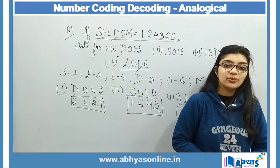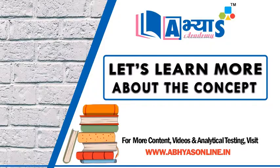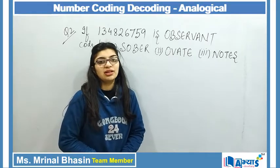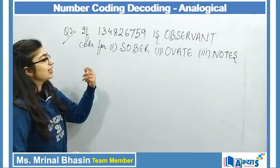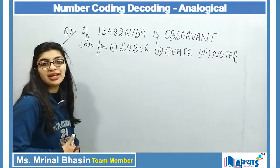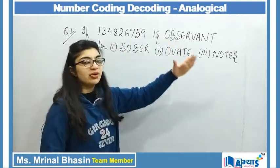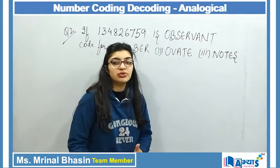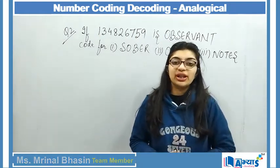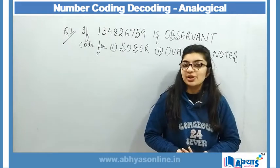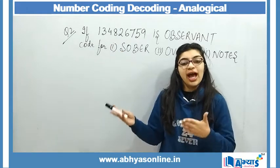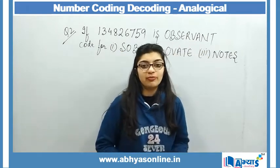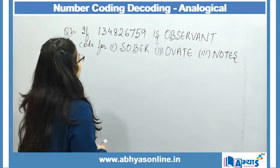Now let's take a look at question number 2. Second question में क्या है — पहले number दिया हुआ है और number के corresponding letter दिया हुआ है। तो जरूरी नहीं है कि हमेशा letter के corresponding number दिया हो — it can be vice versa. It can also be that first the number is given and corresponding to that number you are provided with a letter.